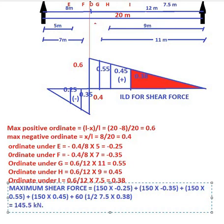This is the procedure to find the maximum bending moment and shear force when there is a combination of both point load and uniformly distributed load in a simply supported statically determinate beam. Hope you all understand how to find out the maximum bending moment and shear force using the influence line diagram. Thank you all for your pleasant listening.